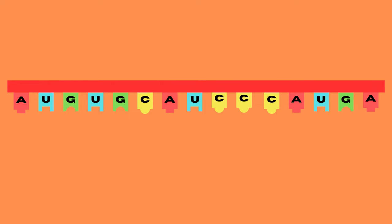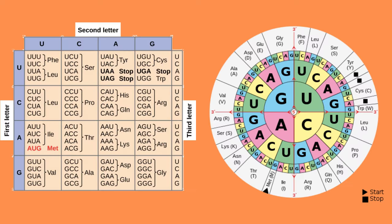The mRNA can be interpreted using a codon table or a codon wheel. We will use the same strand of mRNA in both cases for simplicity, to make sure you understand the idea behind both of these.